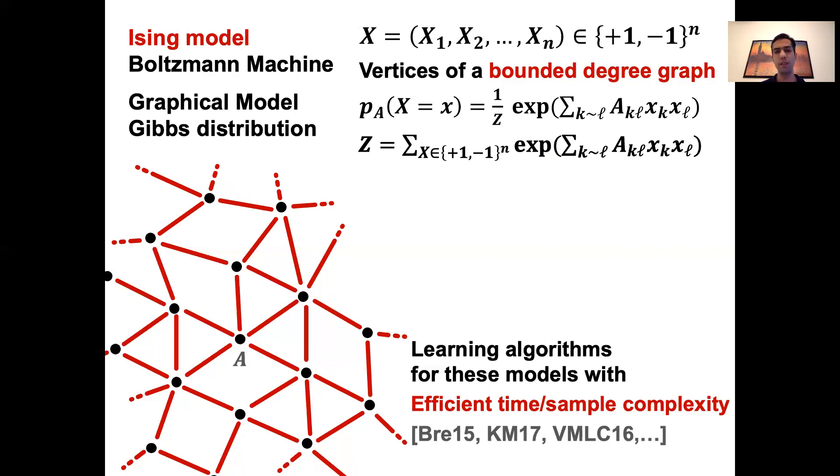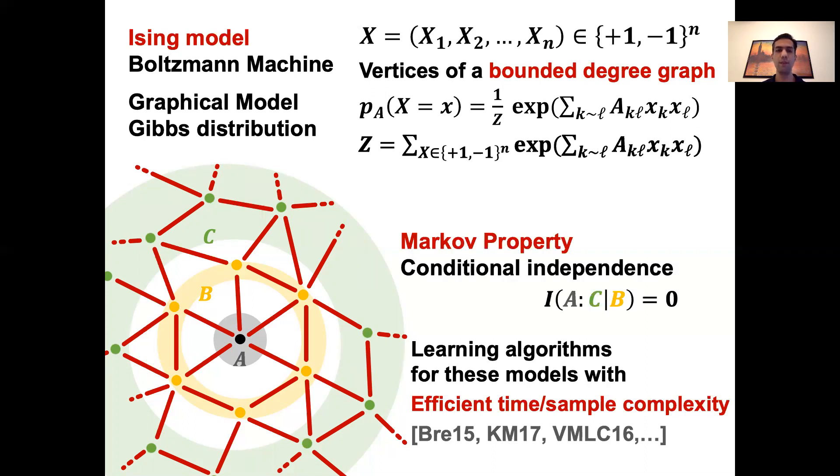So let me explain that in more details. Suppose we divide the vertices into three sets A, B, and C such that the vertices in A are disconnected from those in C. So in other words, the set B shields the set A from C. Then conditioned on the variables in the set B, those in sets A and C are independent of each other, meaning the mutual information between A and C conditioned on B is zero. This is called the Markov property. And it's known that this is a unique property of Gibbs distributions. This is usually called the Hammersley-Clifford theorem.